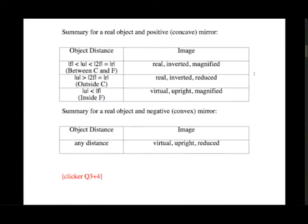Here's a quick summary for a real object and a positive concave mirror. There are three cases, which you don't necessarily need to memorize—you can derive them from ray tracing or vergence equation calculations. It's a good thing to check your understanding by setting up a test case: draw an image, pick a power and center of curvature, then place an object and determine what image properties you'll see.